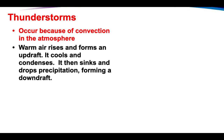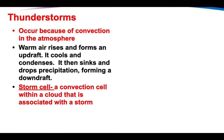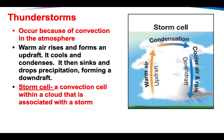Thunderstorms occur because of convection in the atmosphere. Convection is that rising and sinking — anytime you hear that word convection, you should be thinking of this circular pattern. You have warm air rising, and when that happens outside in the atmosphere, it creates what's called an updraft, pulling air upwards. When it gets up there, it cools off, which makes any water vapor inside that air mass condense, and it drops down to the ground because of gravity.